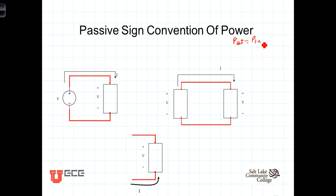Because of this, we state the conservation property by saying that the sum of all powers — the sum of the power associated with all the devices — must equal zero. Now for that to be true, there must be positive power and negative power, because if you are going to add up a bunch of quantities and the sum equals zero, some of them have got to be positive and some must be negative.